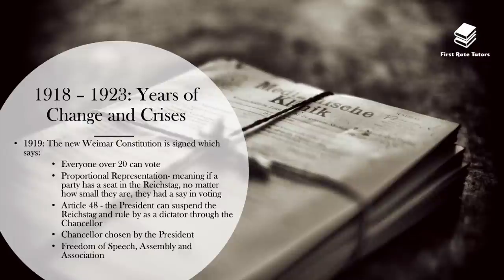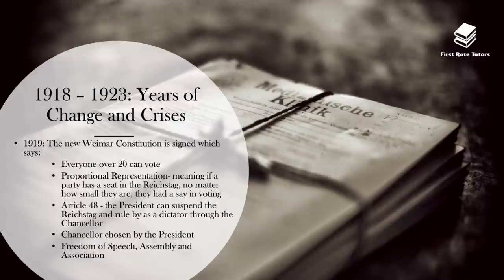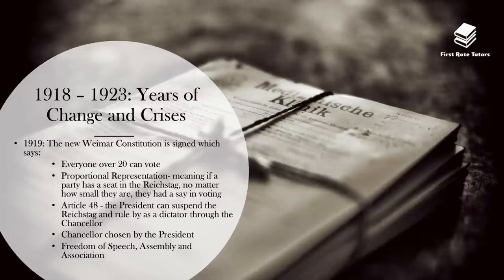Another important event in 1919 was the signing of the new Weimar Constitution. Within this constitution, there were a few important things to be aware of. Firstly, everyone over 20 can vote — in other words, there was universal suffrage for people over 20 years of age in Germany. There was also a system of proportional representation, meaning if a party has a seat in the Reichstag, no matter how small they are, they had a say in voting. Another important aspect was Article 48, which is really important as it was exploited by Hitler, and this is how he ultimately became the dictator. This article essentially states that the president can suspend the Reichstag in any time of crisis or emergency and rule as a dictator through the chancellor. Two other important things the Weimar Constitution contained: the chancellor is chosen by the president, and it contained the notion of freedom of speech, assembly and association — in other words, it promoted democracy.